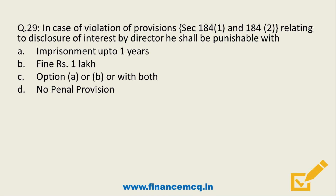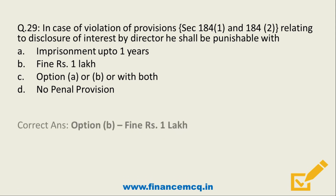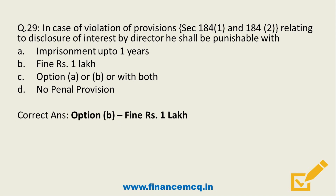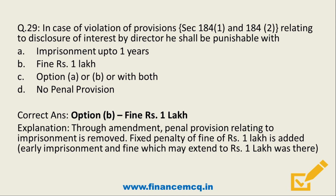Question 29. In case of a violation of provisions of section 184(1) and 184(2) relating to disclosure of interest by directors, he shall be punishable with: option A imprisonment, option B fine of Rs. 1 lakh, option C imprisonment and fine, or option D no penal provision. The answer is option B — fine of Rs. 1 lakh. Through this amendment, the penal provision of imprisonment is removed and the penalty is fixed at Rs. 1 lakh. Earlier, imprisonment and fine extending up to 1 year were prescribed; now the fixed penalty amount of Rs. 1 lakh applies.